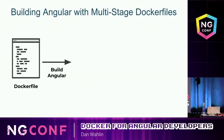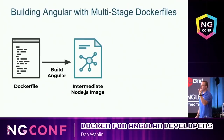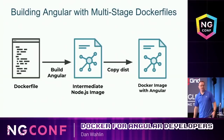Docker has a newer concept called multi-stage Dockerfiles. In a single Dockerfile, you can have multiple images built and containers that run. For example, you could have a Node image that does the build, and the output — the dist folder — gets copied over to an Nginx or HAProxy container for your actual runtime production or staging environment.